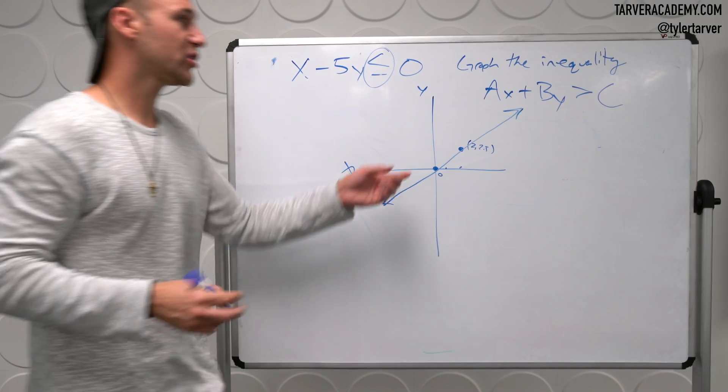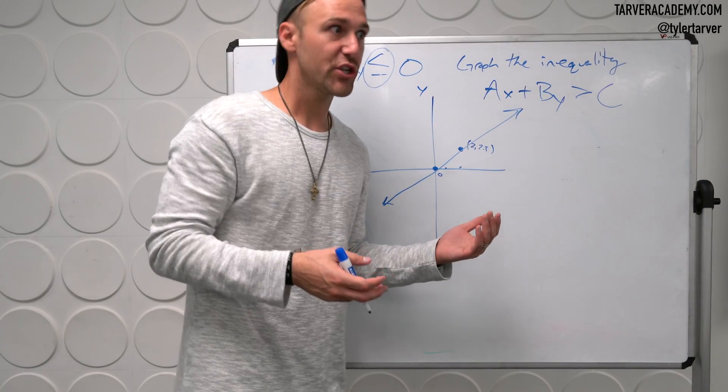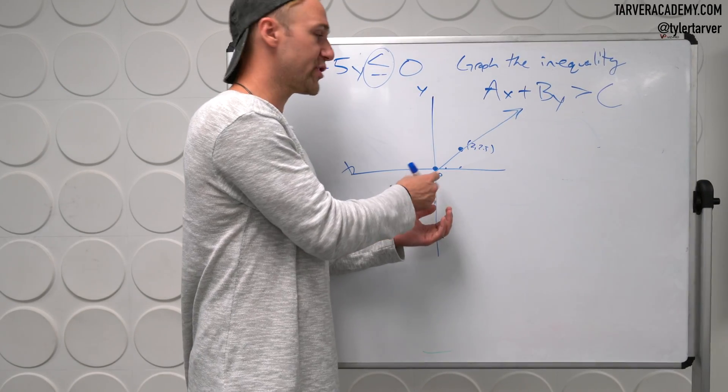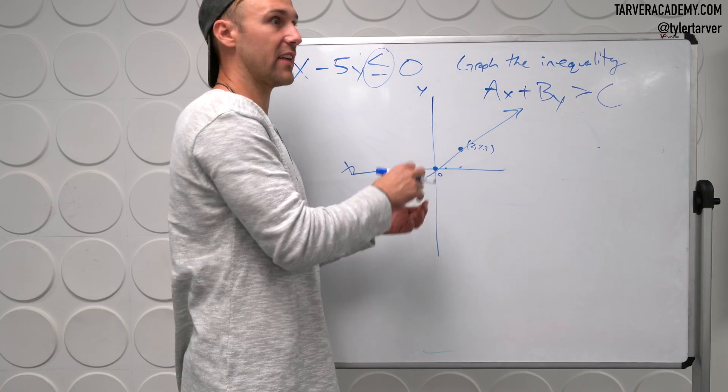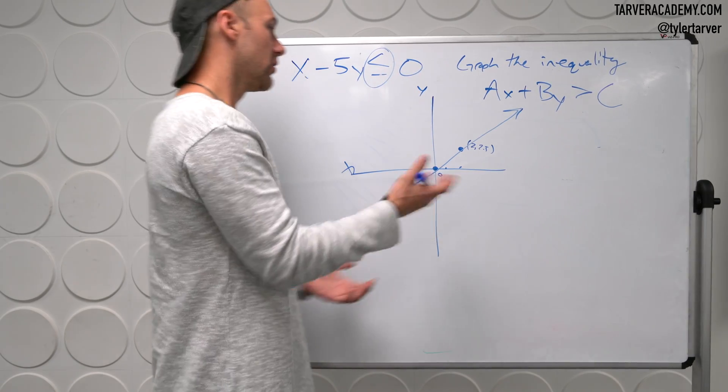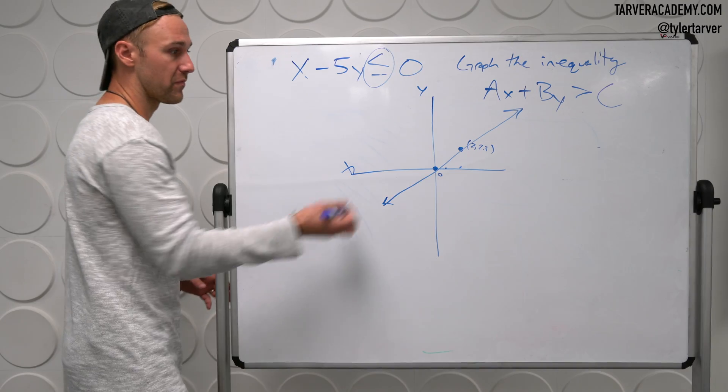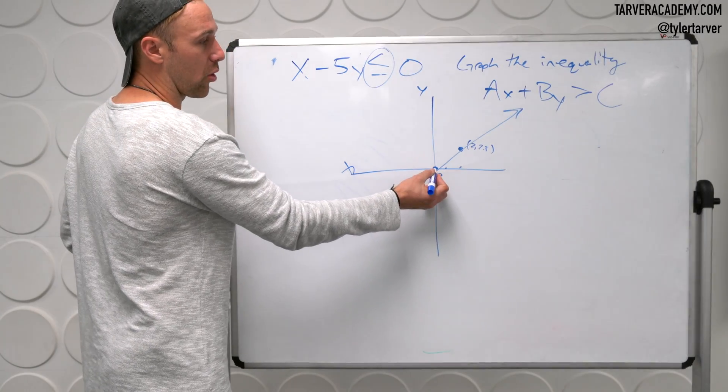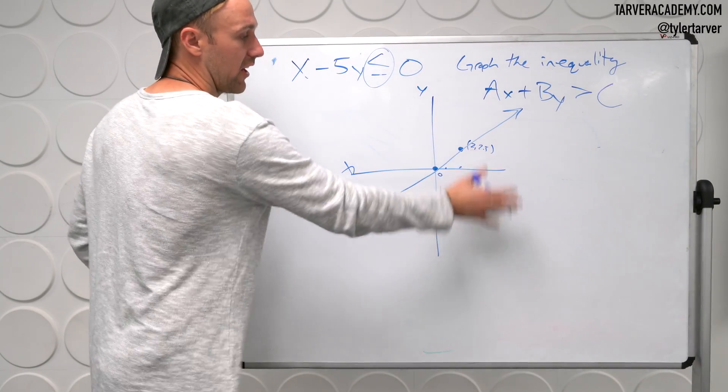Now used to, I would say now to figure out where to shade, plug in your origin. And then if it works, shade that side. If it doesn't work, shade the other side. We can't do that here, can we?